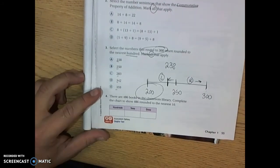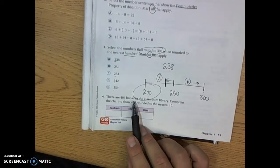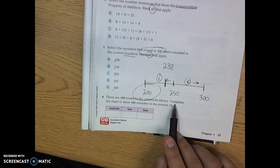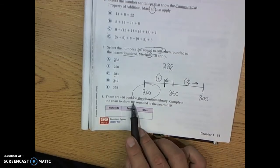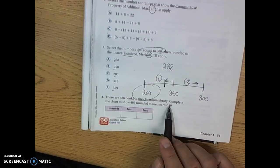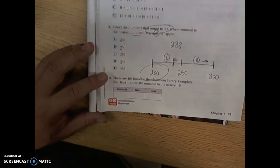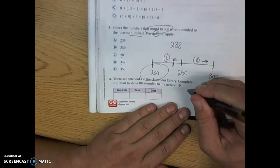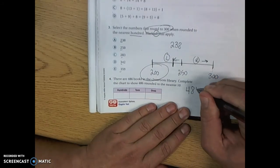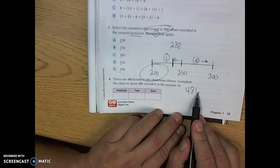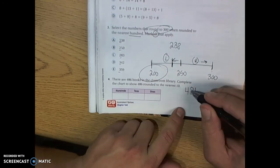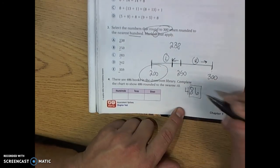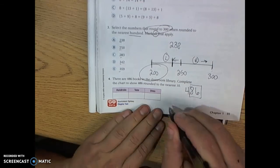Look at number four here. There are 486 books in the classroom library. Complete the chart to show 486 rounded to the nearest 10. The same kind of rounding problem except we're looking at the 10's place. So if you see 486 and we're only worried about the 10's place that means you're only really focused on these two numbers here.